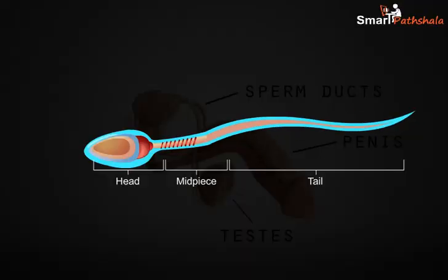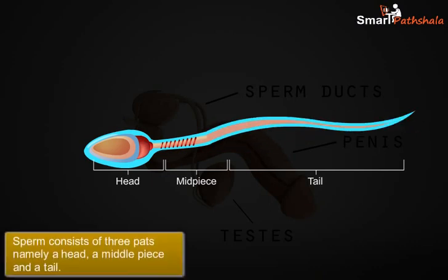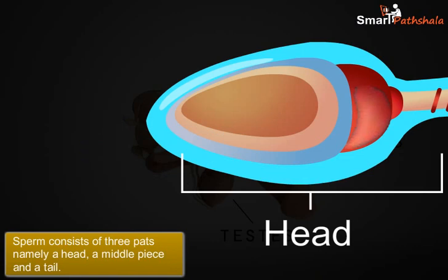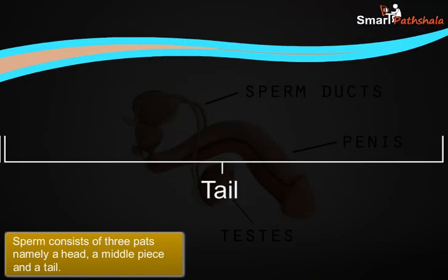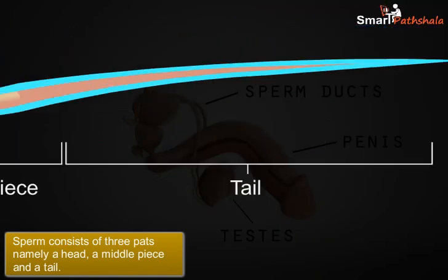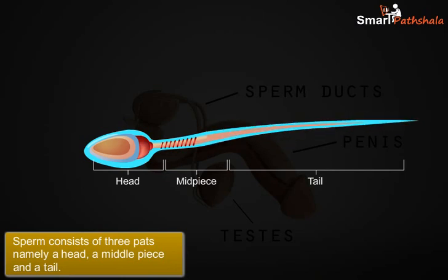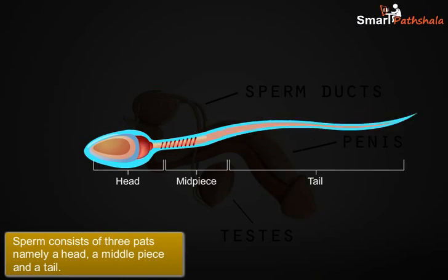Now let us understand the structure of the sperm. Sperms are very small in size and each sperm consists of three parts, namely a head, a middle piece, and a tail. Millions of sperms are produced from testes and each sperm is a single cell.